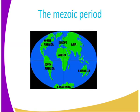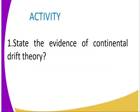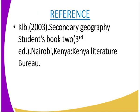That marks the end of our lesson. As you can be able to see, we have the activity there. The student must state the evidence of the continental drift theory. So you are supposed to explain the four steps, and from there you can be able to get your marks. The reference is KERB 2003, Secondary Geography Student Book 2.